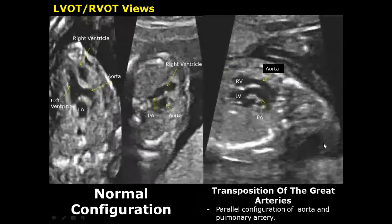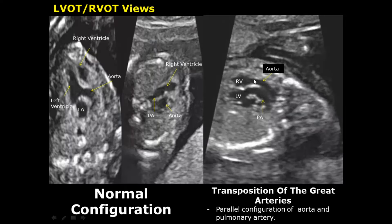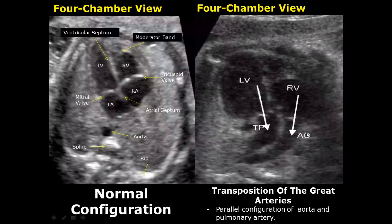In transposition of the great arteries, the aorta and pulmonary artery switch places. Normally the aorta and pulmonary artery cross each other — they are not parallel — but in transposition of the great arteries they have a parallel configuration. This parallel configuration is a key sign of transposition of the great arteries. In this four-chamber view, you can see the parallel configuration, which is not present in the normal view.